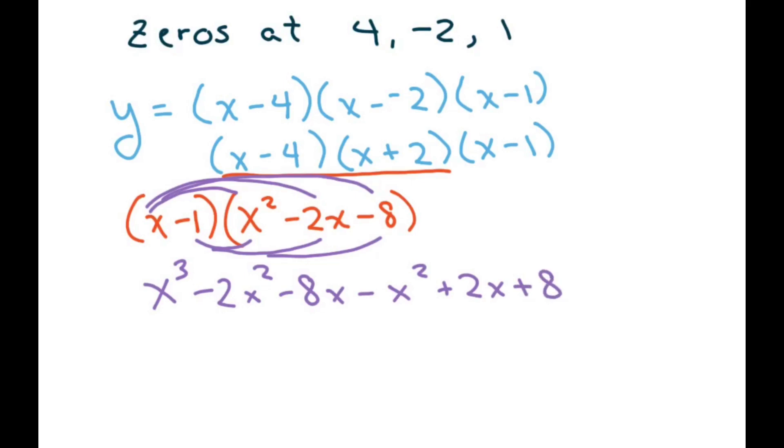And then all you have to do is collect like terms. We only have one x cubed. We have our x squares right there, so that would be negative 3x squared. We have these two x's. That's negative 8x plus 2x is minus 6x. And then plus 8.